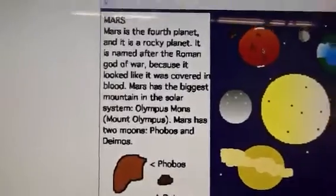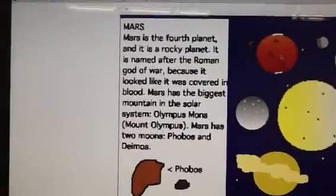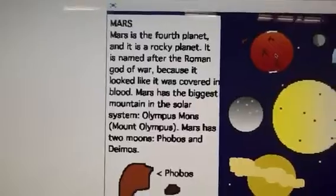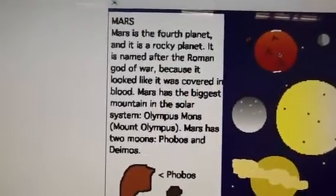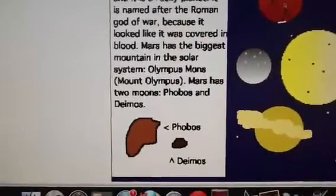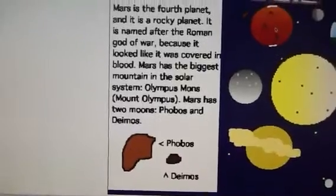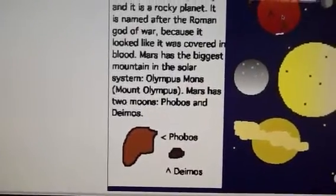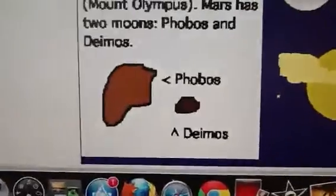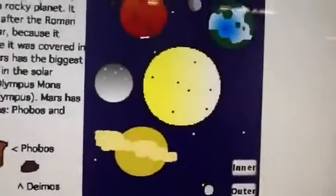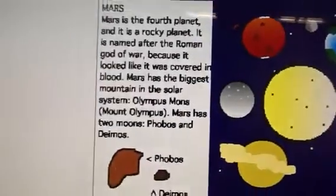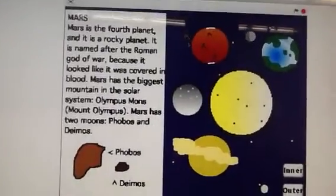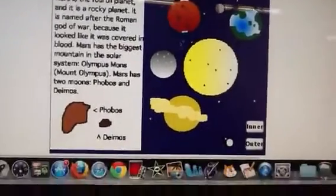So we'll read this one. Mars is the fourth planet and it is a rocky planet. It is named after the Roman god of war because it looked like it was covered in blood. Mars has the biggest mountain in the solar system, Olympus Mons, which means Mount Olympus. Mars has two moons, Phobos and Deimos. You can see them right here — there's Phobos and Deimos, this tiny little thing.